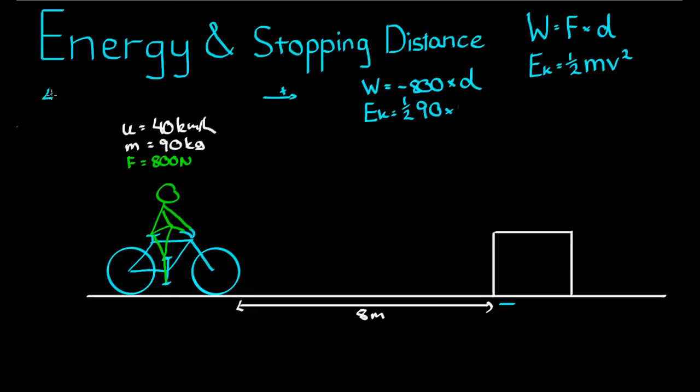So I go 40 divided by 3.6, so that's kilometers per hour. The units down here get a bit tricky. Let's just say 40 divided by 3.6 is equal to 11.11 meters per second. So 40 kilometers an hour is equal to 11.11 meters per second.